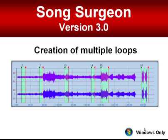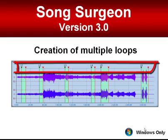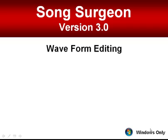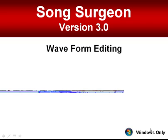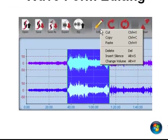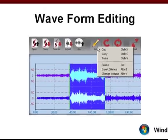Version 3 also allows you to create multiple loops in a single file with different individual settings for each loop. Version 3 also allows you to edit the raw waveform data. This means you can create entirely new files for practice, performance, or for whatever reason you might have by simply cutting and pasting within a file or between two files. You can also insert silence or change volume.